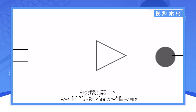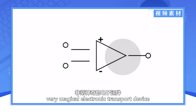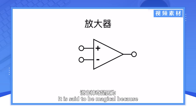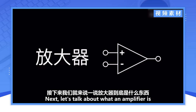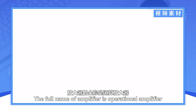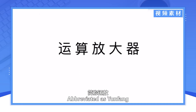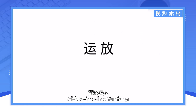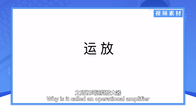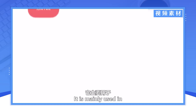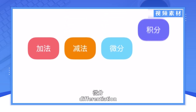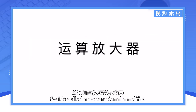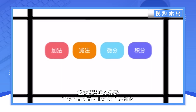Today, I would like to share with you a very magical electronic device — an amplifier. It is said to be magical because it can amplify the input V1 signal tens of thousands of times. The full name of amplifier is operational amplifier. Why is it called an operational amplifier? It's because at the beginning, it was mainly used in analog operation circuits such as addition, subtraction, differentiation, and integration. So it's called an operational amplifier. The amplifier looks like this.